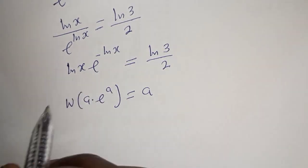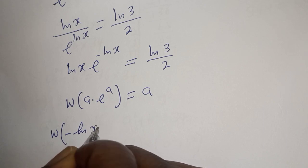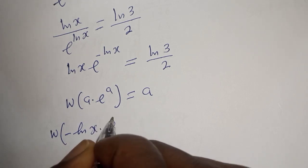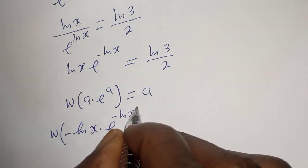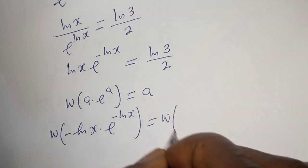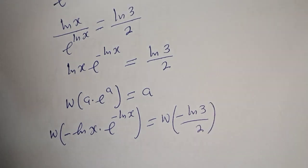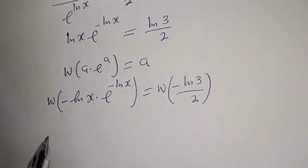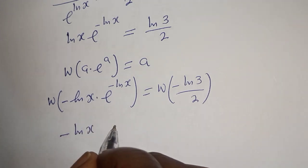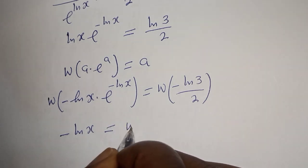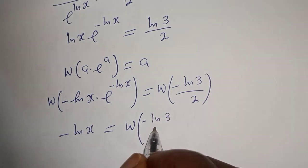From here we apply the W function to both sides: W of negative ln of s times e raised to power negative ln of s is equal to W of negative ln of 3 over 2. This gives us: negative ln of s is equal to W of negative ln of 3 over 2.